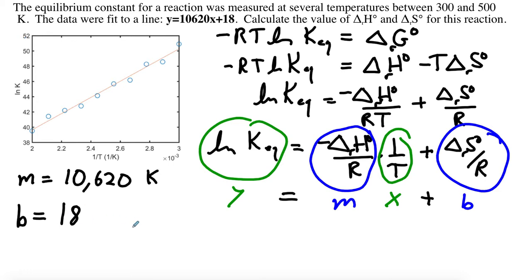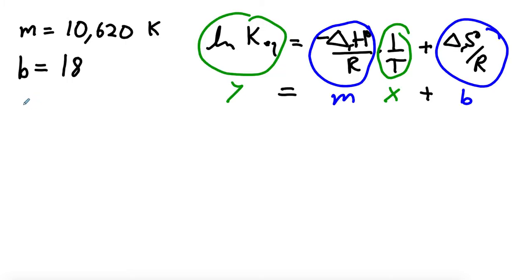Now we can use this equation and these numbers to calculate delta S standard and delta H standard. We have slope M is equal to negative delta H standard over R, so don't forget the negative. That's part of the slope, so you've got it included in here. These are going to be opposite in sign.